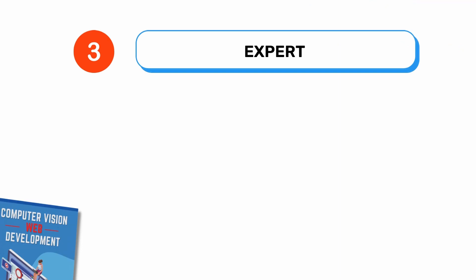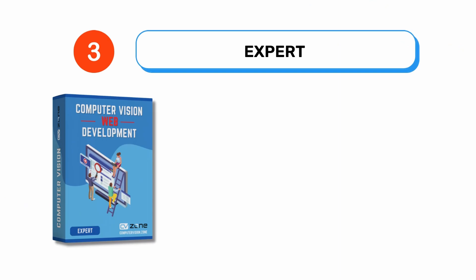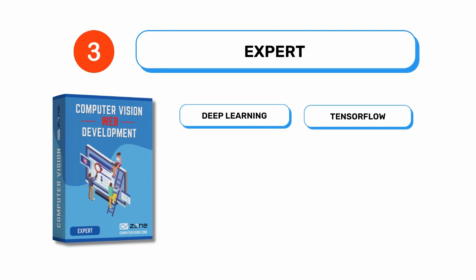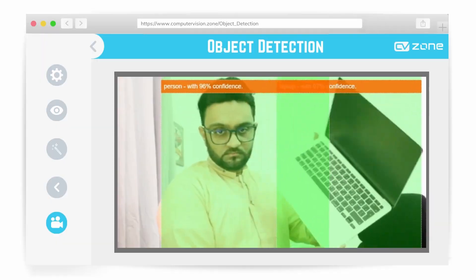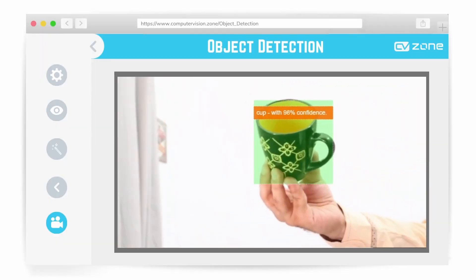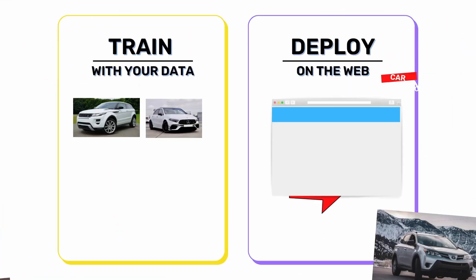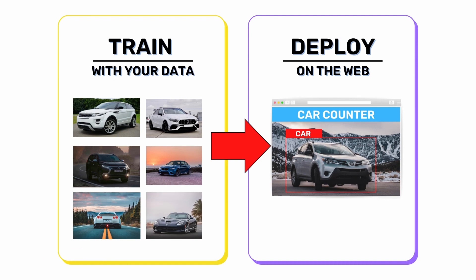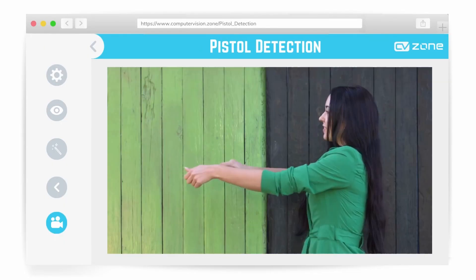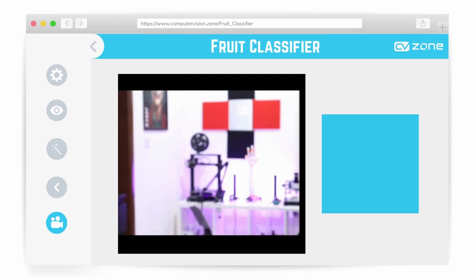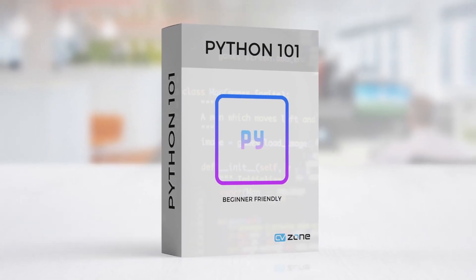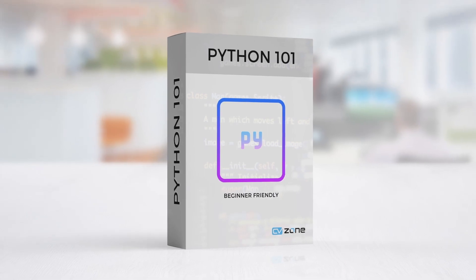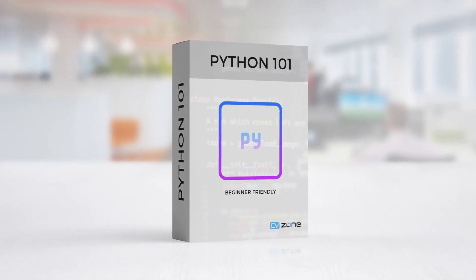In the third part, computer vision web expert, we will learn the basics of deep learning with TensorFlow on the web. Here you will understand the fundamentals of object classification and object detection. You will use pre-trained models for testing and then learn to create your own models from your own dataset. This will allow you to create object detection for any type of custom objects. We will also create three projects in this part. This part will also contain a free Python course that will make it easier for you to create your own models.